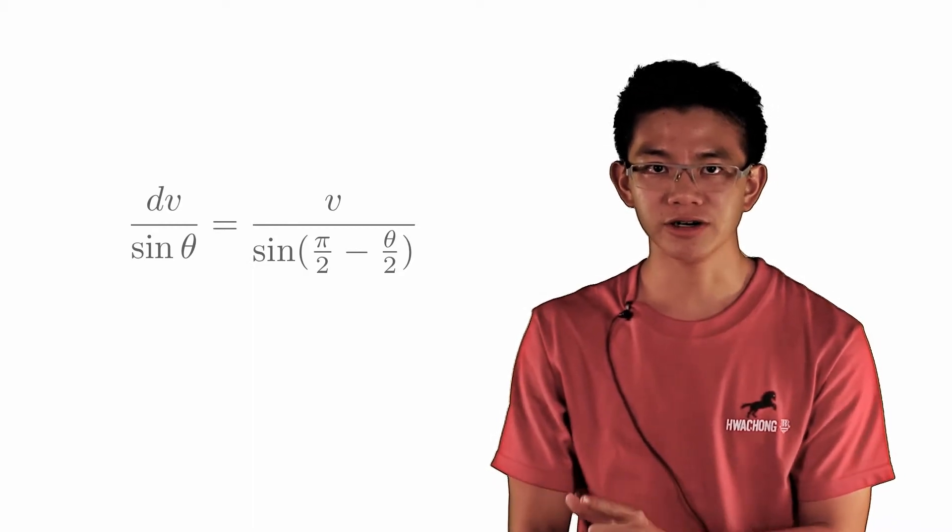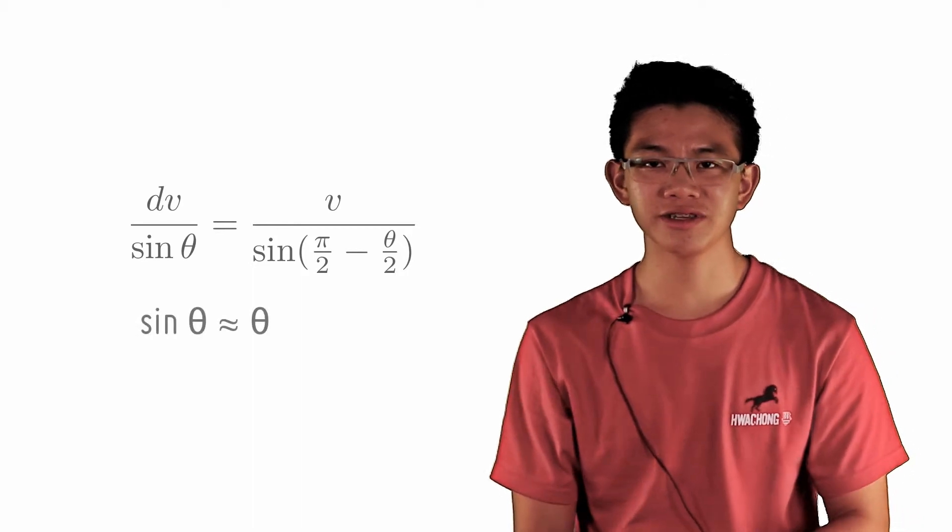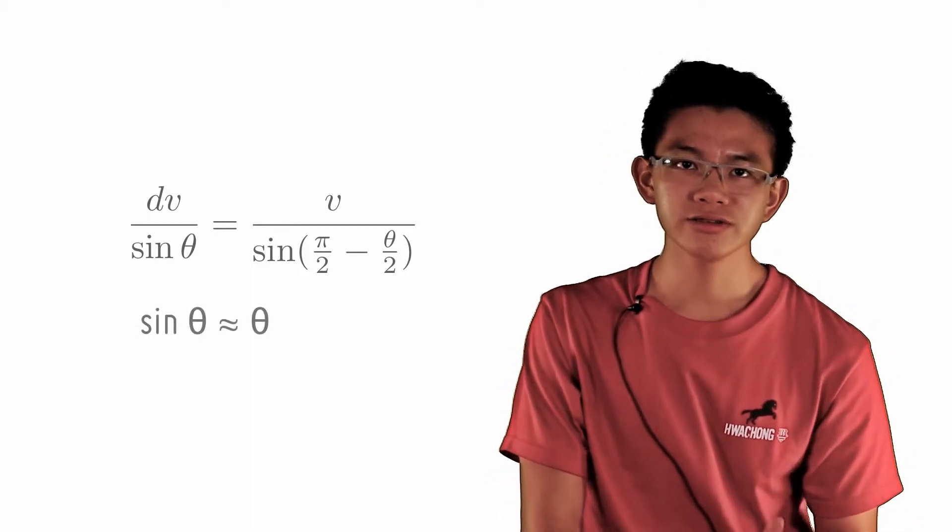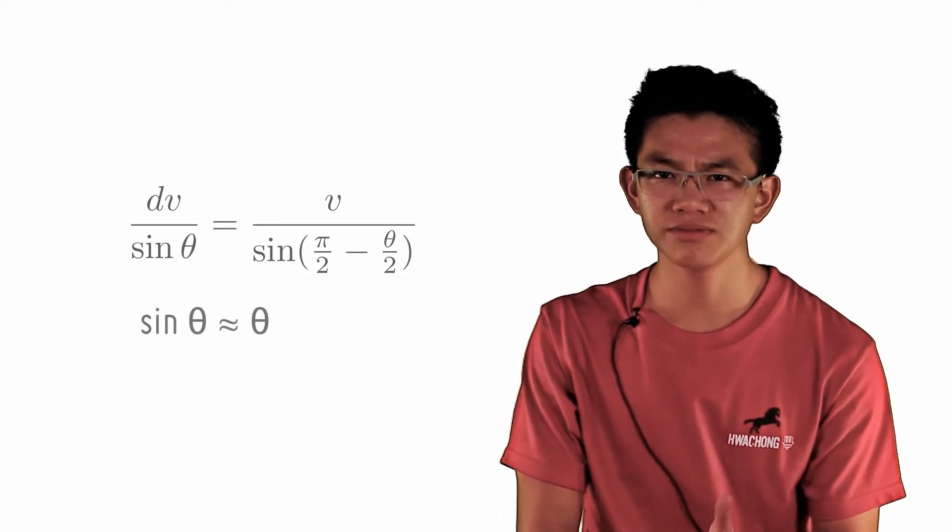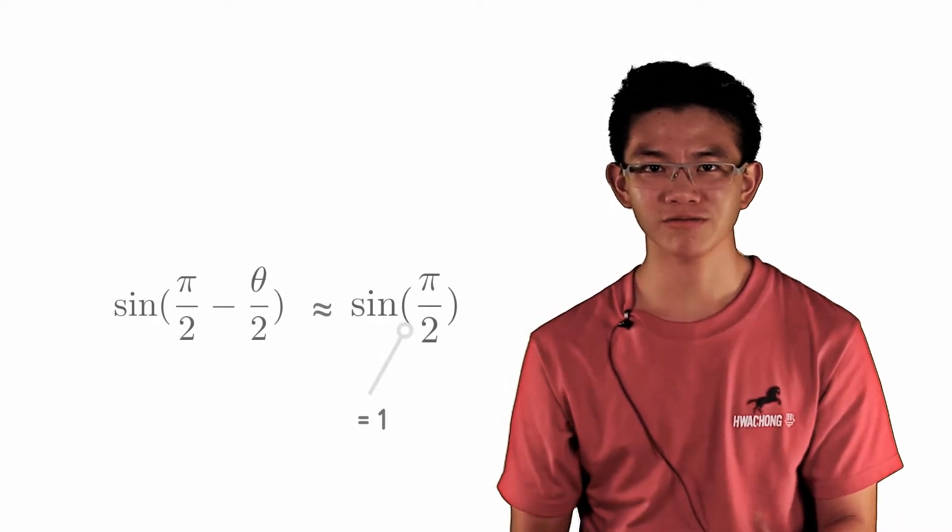Hence, as theta is small, and since it's in radians, sine theta is approximately equal to theta. Also, theta over 2 is much smaller, so sine pi over 2 minus theta over 2 is approximately equal to sine pi over 2, which is basically 1.